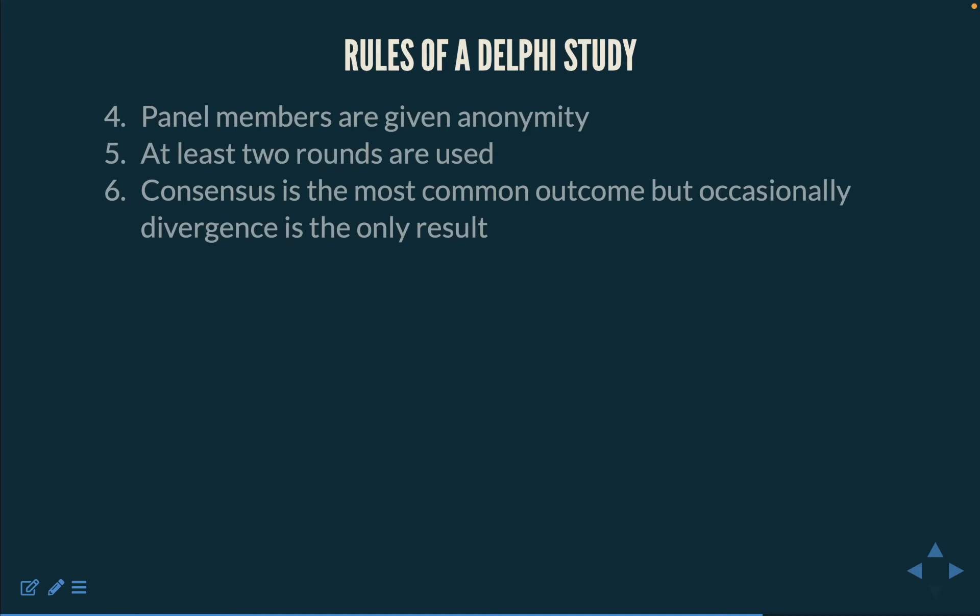Panel members are given anonymity. In order to encourage honest and open answers, much of the literature on the Delphi method states that the identity of individual panel members should never be disclosed. This is often very difficult in areas where all experts are aware of the other experts in the field. Anonymity has usually been a characteristic of Delphi studies, but many modified studies do not place anonymity high on the priority list, as there may be more to be gained by members seeing each other. Knowing that contributions are being made by those in the best possible position to comment encourages more honest and better considered responses.